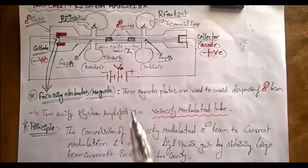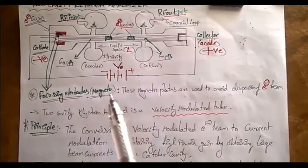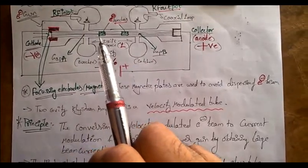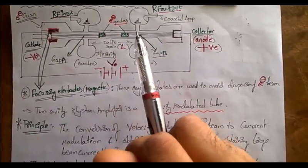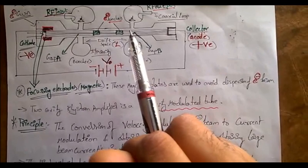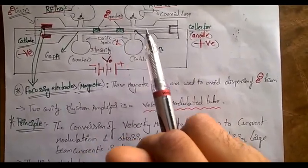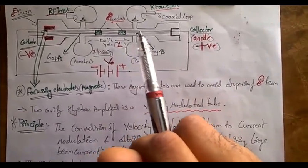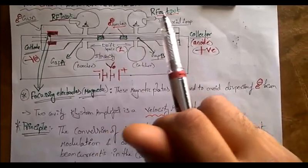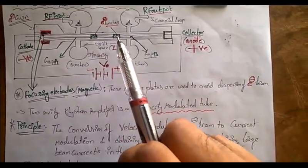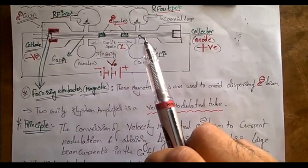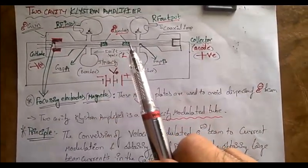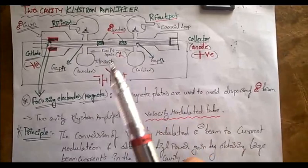From the large beam currents in the catcher cavity, the velocity modulated electron beam travels through drift space. At the catcher cavity, AC current is produced due to oscillations and the AC current is taken out. The power gain is also very high using this two cavity klystron amplifier.